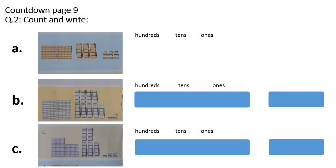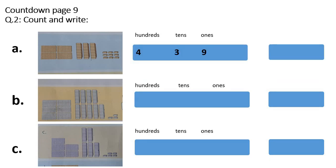Now please open your Countdown page 9. Count and write. Part A: you will count these hundreds — 1, 2, 3, 4: 400. How many tens? 1, 2, 3: 3 tens. And how many ones? 1, 2, 3, 4, 5, 6, 7, 8, 9: 9 ones. So you will write 439.